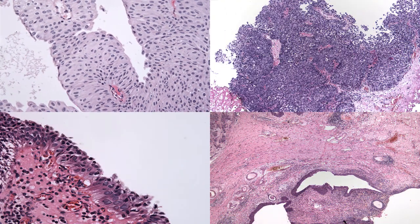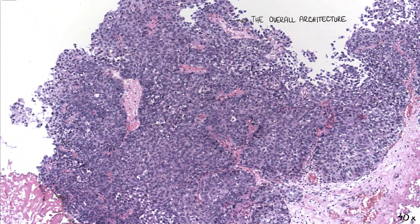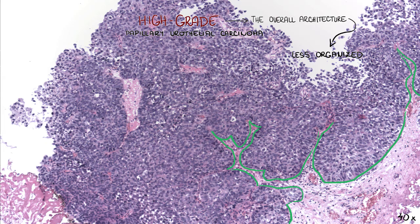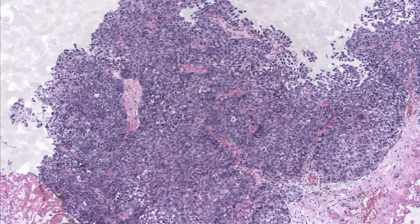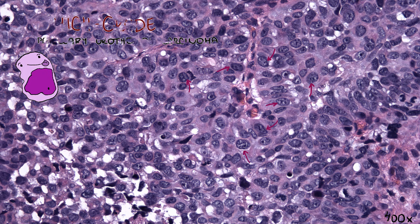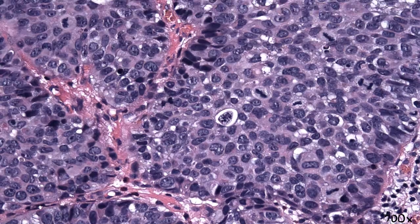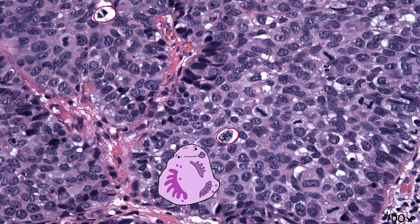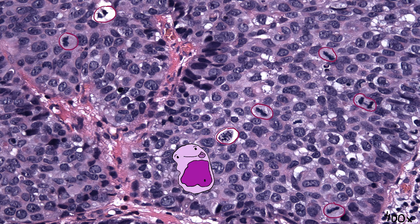On the other hand, the overall architecture of the high-grade papillary urothelial carcinoma embodies marked cellular atypia, large hyperchromatic nuclei, numerous mitoses including atypical ones, and the cells show loss of polarity.